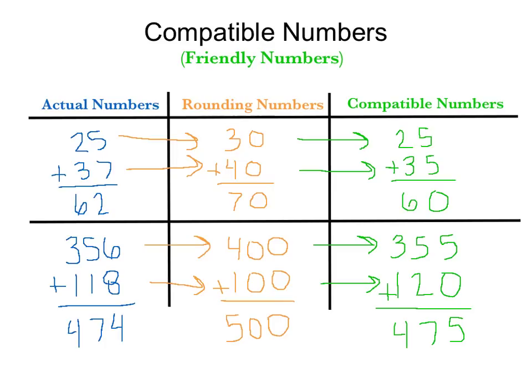So, again, compatible numbers, just another way to estimate. Not really a strict rule. You're looking for fives and tens that make it easy to add. Those friendly numbers. And, like we said, you may see something differently. So whatever's friendly for you and easy and quick to add for you.